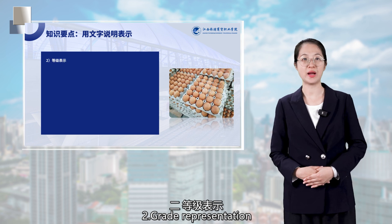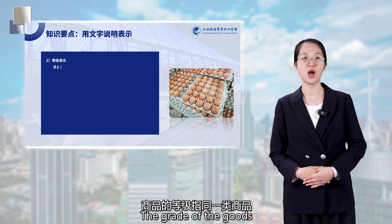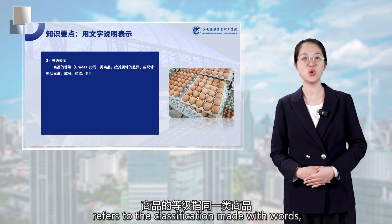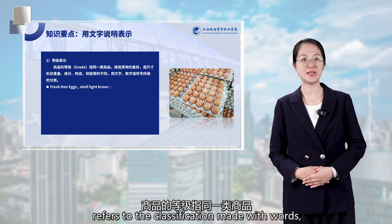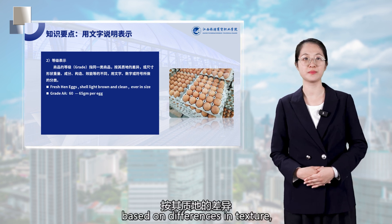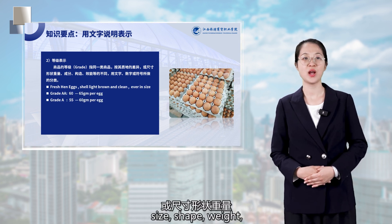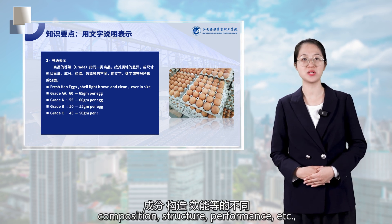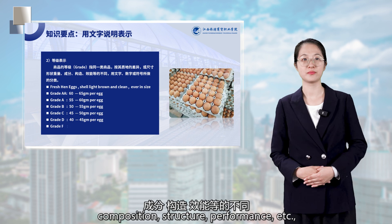Method 2: Grade representation. The grade of the goods refers to the classification made with words, numbers, or symbols based on differences in texture, size, shape, weight, composition, structure, and performance within the same category of goods.